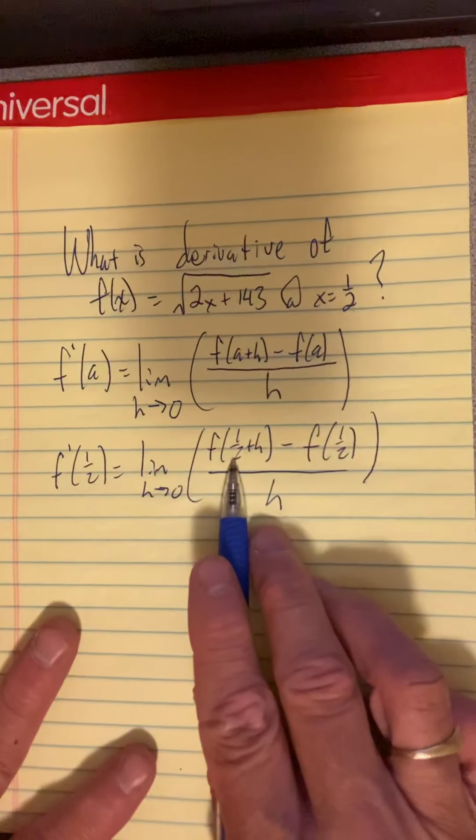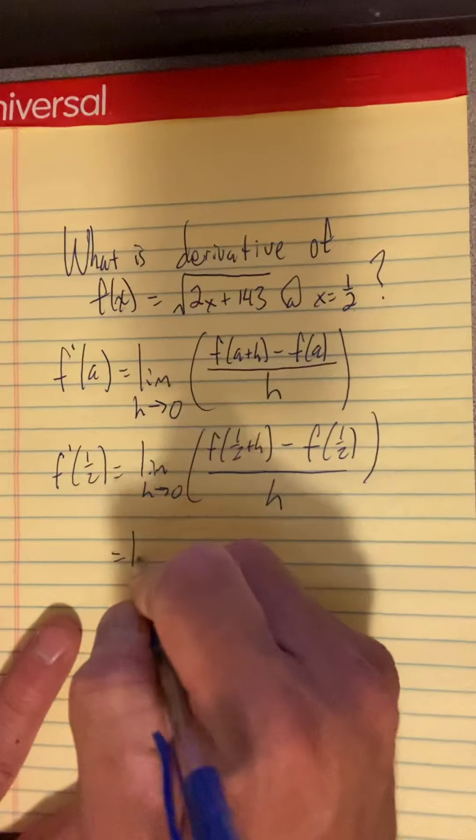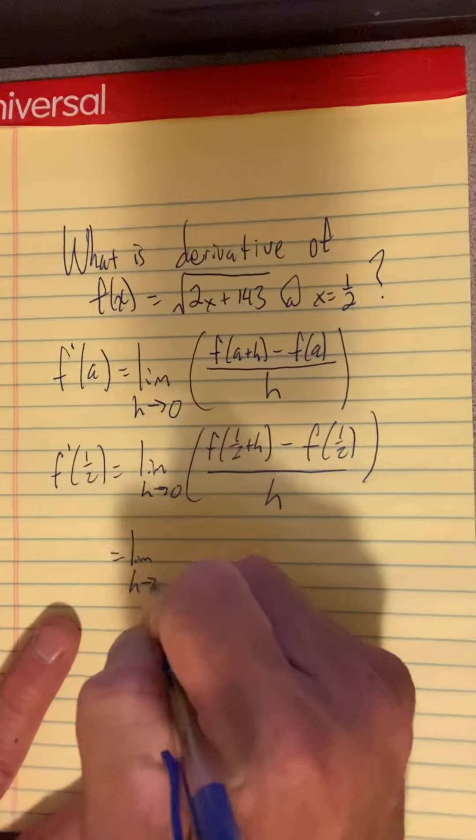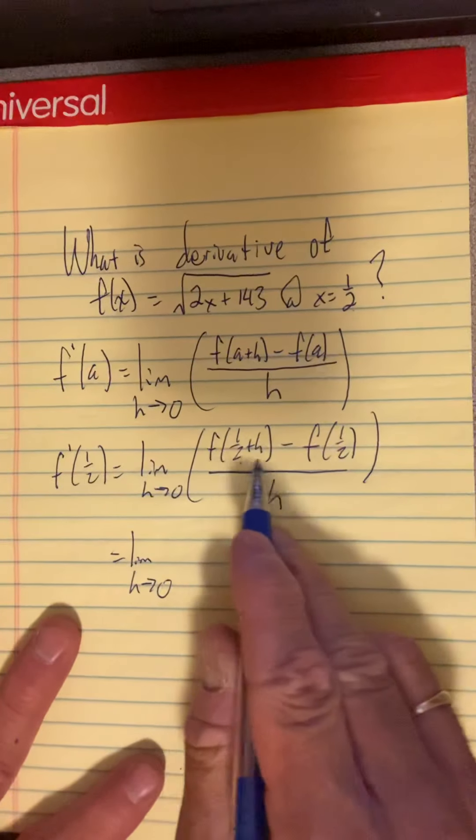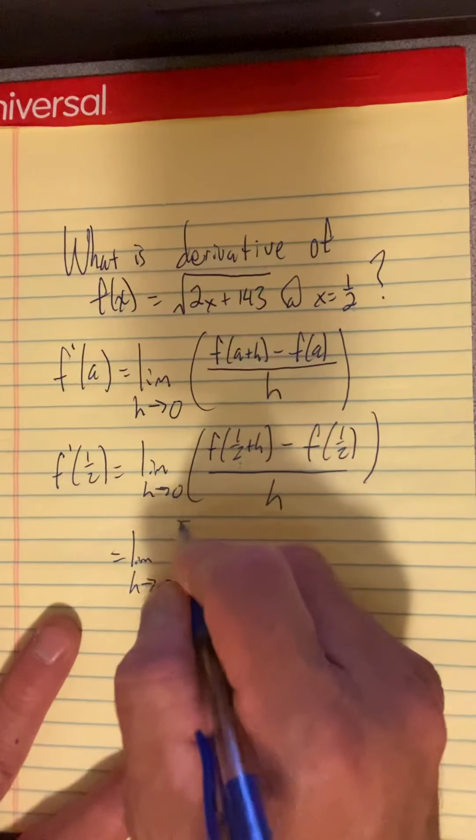Now this is function notation. It means to evaluate the function at this input. Well, the input's a binomial, so you have to put in a binomial now.